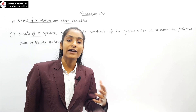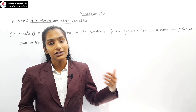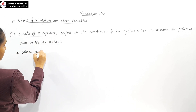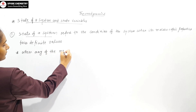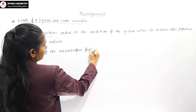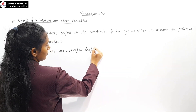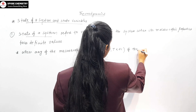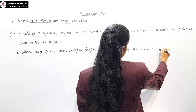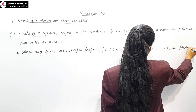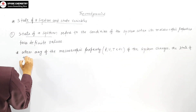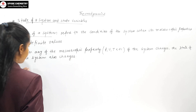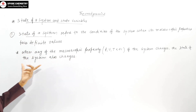And when the macroscopic properties change, the state of the system also changes. So when any of the macroscopic properties — like pressure, volume, temperature, etc. — of the system changes, the state of the system also changes.